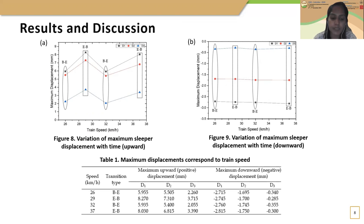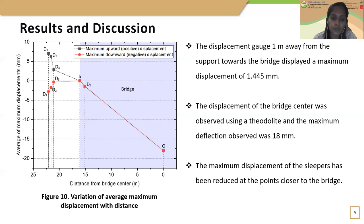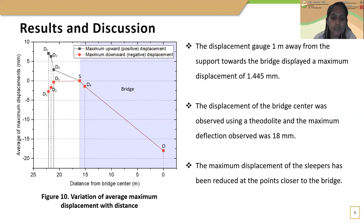During bridge–embankment transition, the rear axle generates the highest impact when the train is leaving the bridge. During embankment–bridge transition, the front axle generates the highest impact when the train is approaching the bridge. The maximum downward and upward displacements of sleepers at different speeds are shown for both transition types. The maximum upward displacement during embankment–bridge transition is higher than that of bridge–embankment transition. The maximum upward displacement reduces with increasing train speed for both transition types, while maximum downward displacement increases with train speed. The displacement gauge one meter from the support showed a maximum displacement of 1.445 mm, while the theodolite measured a maximum deflection of 18 mm at the bridge center.